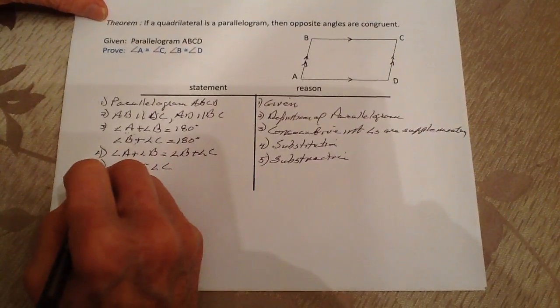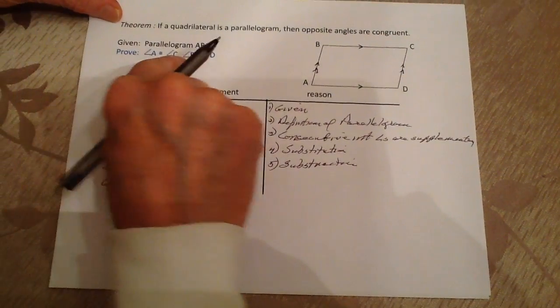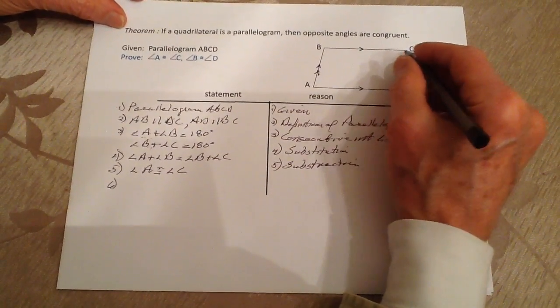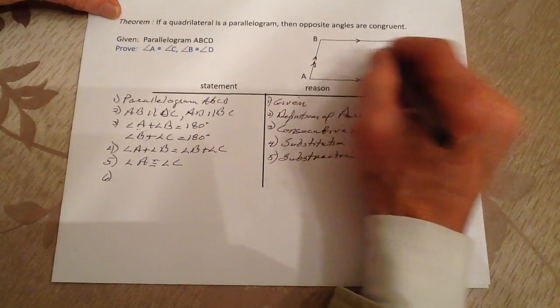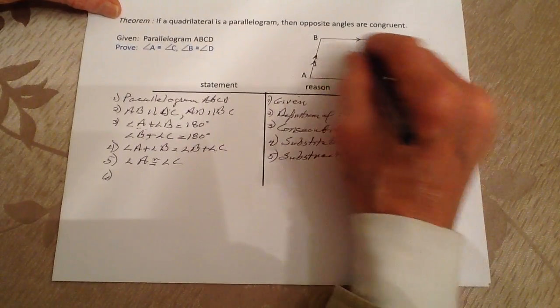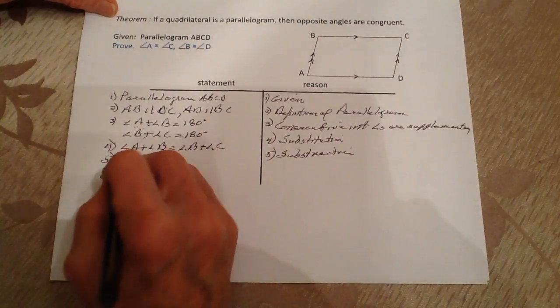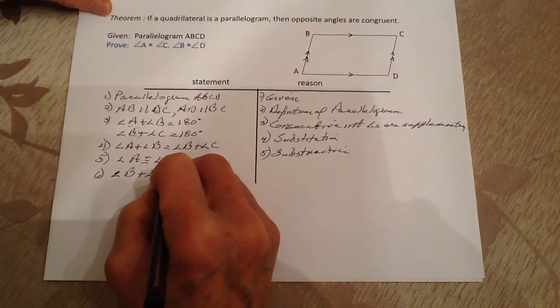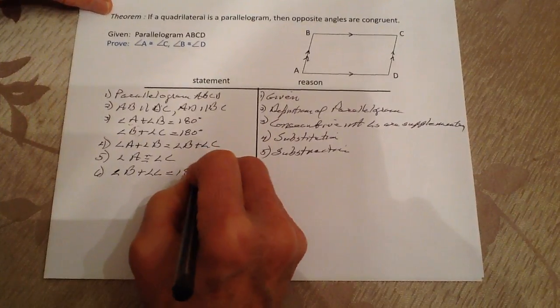Now we know statement six. Let's do it again. Let's take angle B plus angle C, which is going to equal 180 degrees.